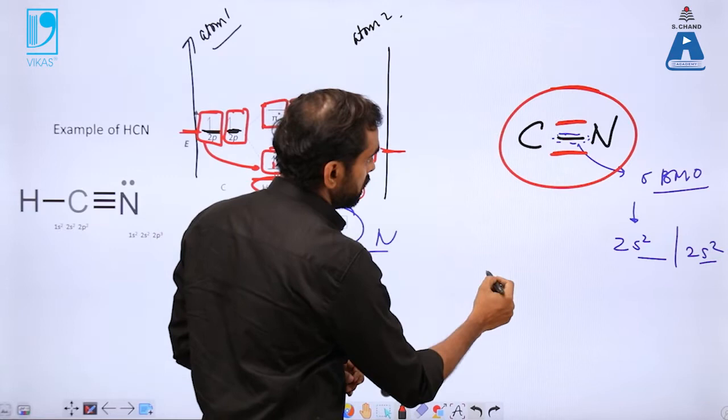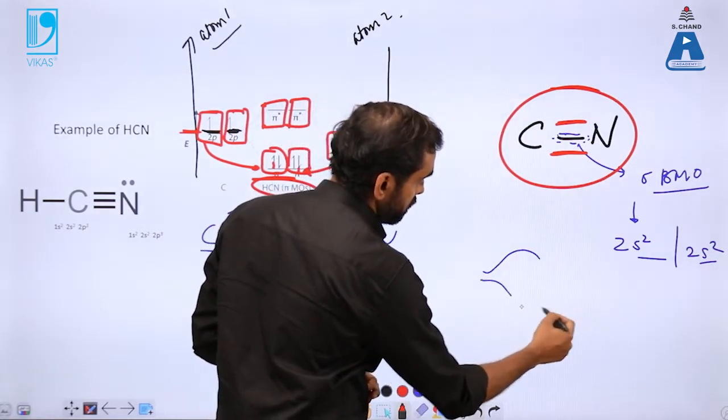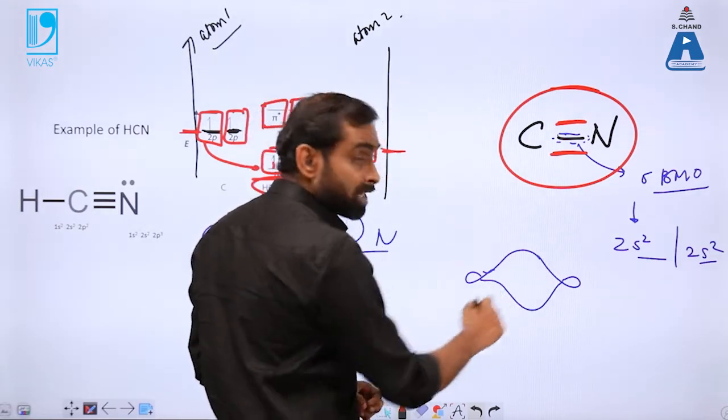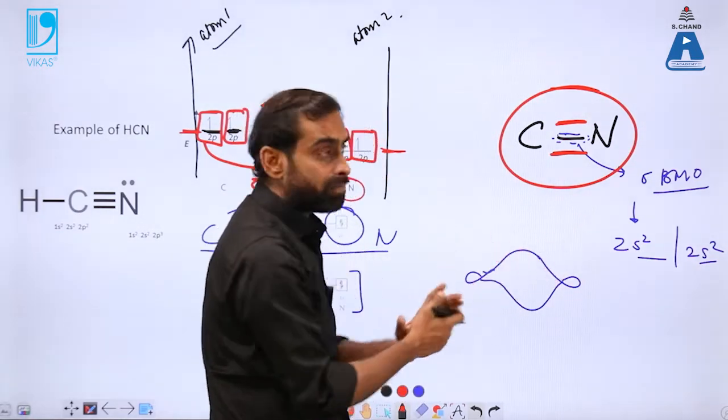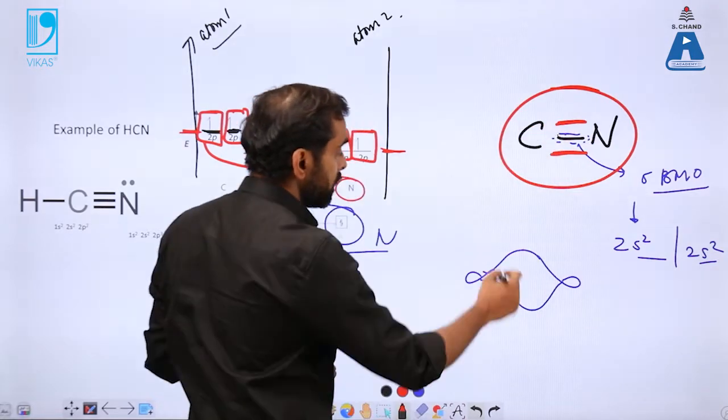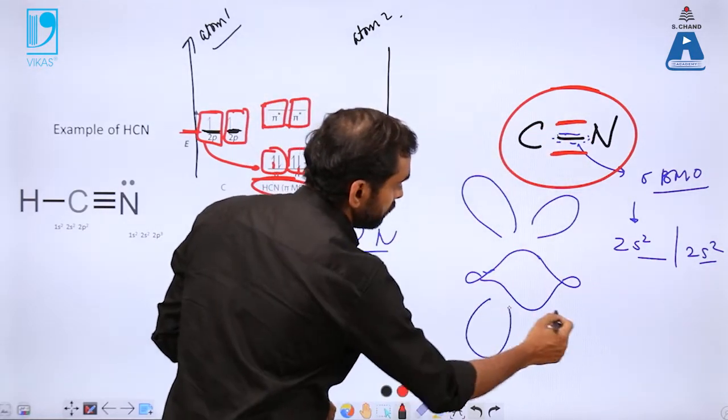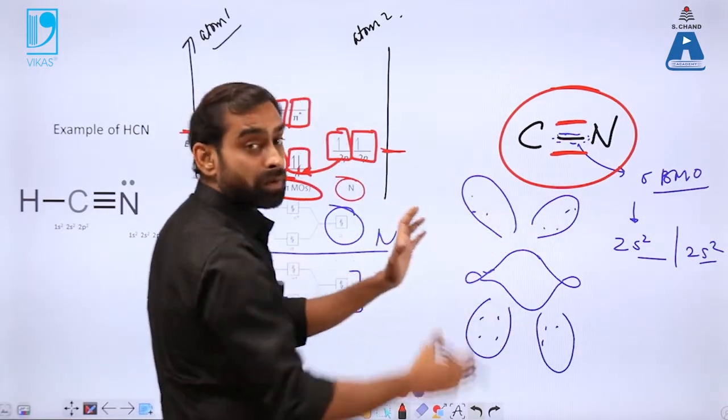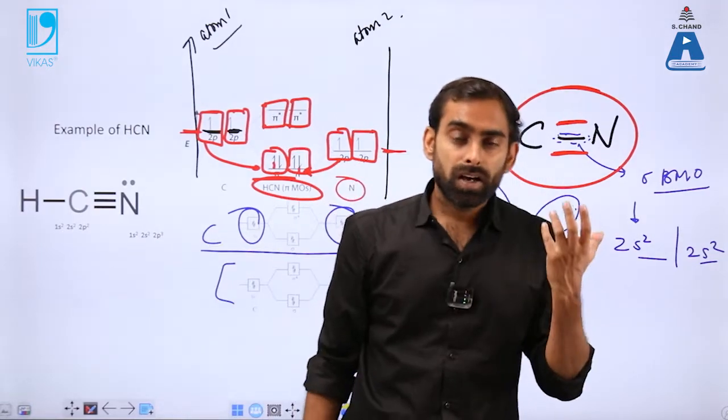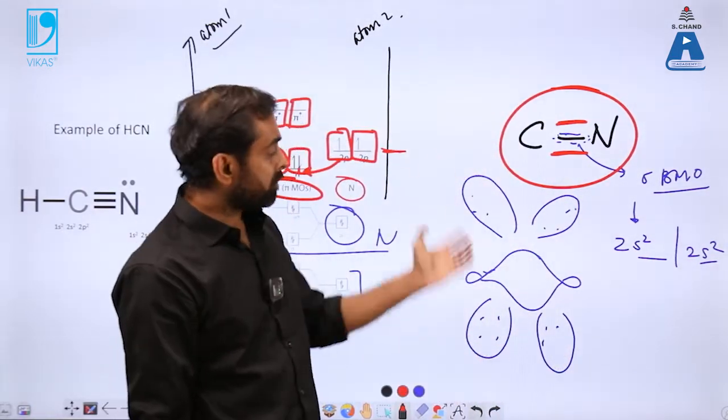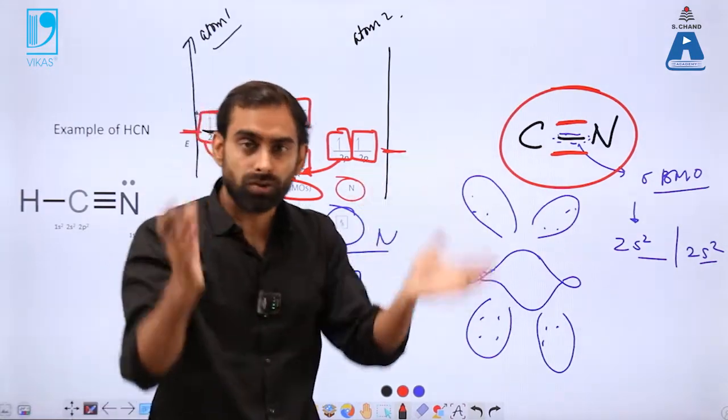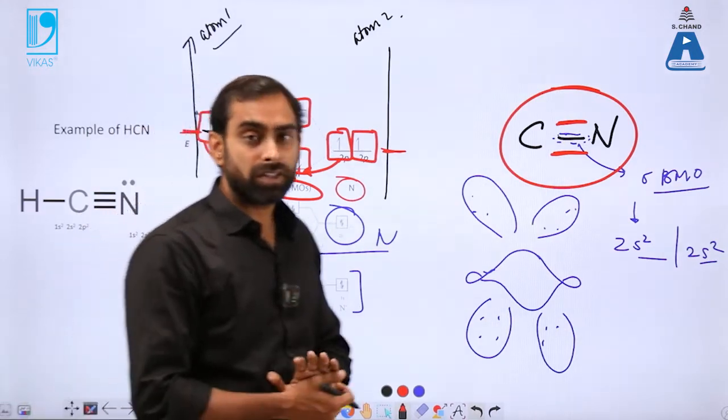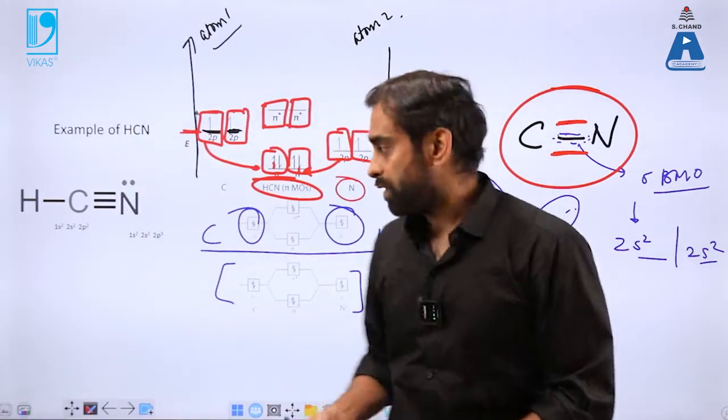So you can say there will be one sigma BMO, there will be one sigma ABMO which will be representing the first interaction of the first bond, then there will be pi BMO and pi ABMO which will be two. So if you can imagine this in light of Schrodinger's equation, that will be a pretty complex structure of clouds or complex representation of molecular orbitals. So this is how we represent the complex structures of molecules.